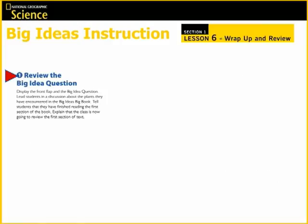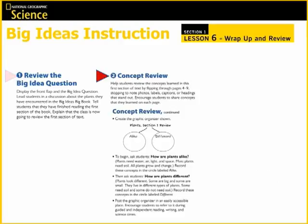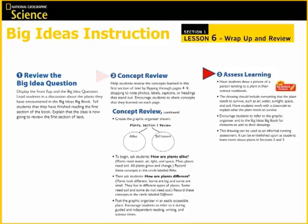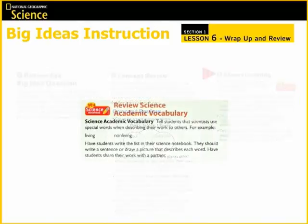At the end of each section, there is a wrap-up and review. This begins with a review of the Big Idea question. You then move on to a concept review, which includes any text features or other reading skills they've been working with. And finally, you have the opportunity to assess students' learning. A review of the science vocabulary is also included, and students can put this information in their science notebooks.